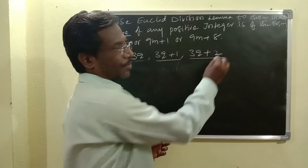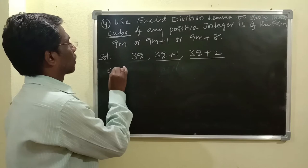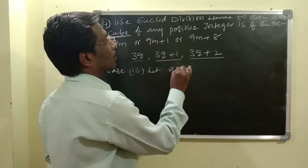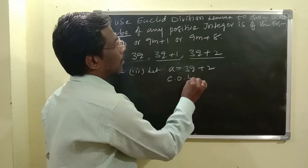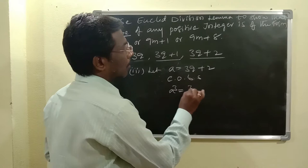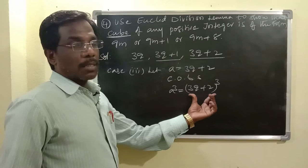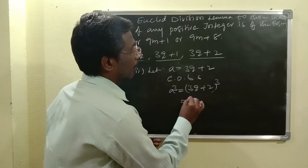Now taking case 3. Case 3 is 3Q plus 2. Let A equals 3Q plus 2. Cubing on both sides, A cubed equals 3Q plus 2, whole cube. The right side term is in the form of A plus B whole cube, so I am going to expand using that formula.